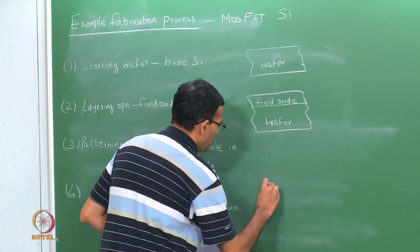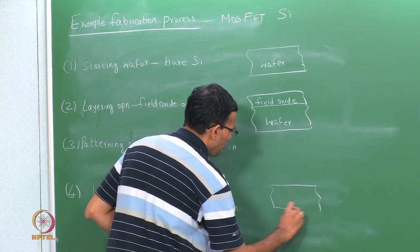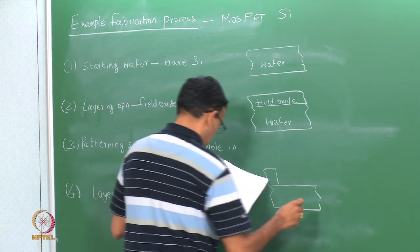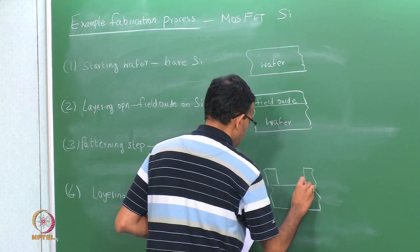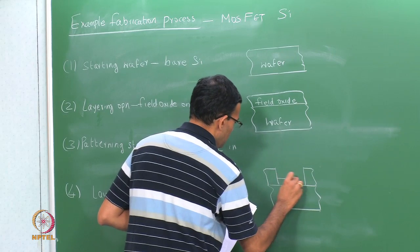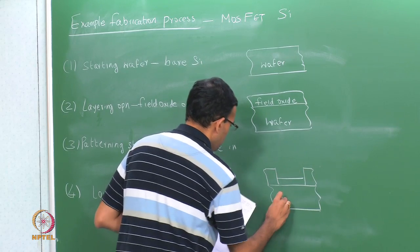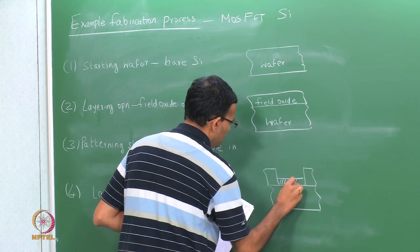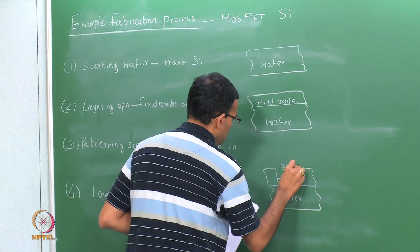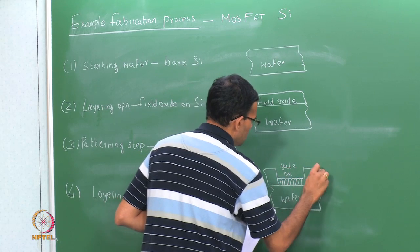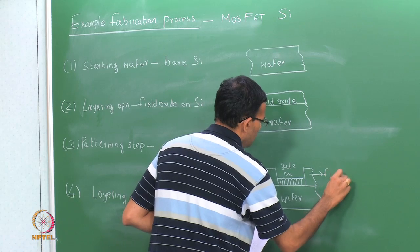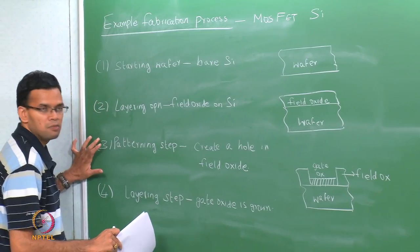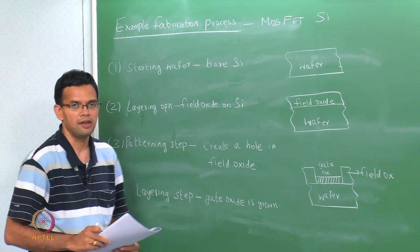In earlier technologies, SiO₂ would act as the gate oxide; later, silicon oxynitrides and now even high-k dielectric materials are used. But whatever the oxide, it is basically a layering step. So now you have your wafer with a hole in the field oxide and the gate oxide grown in that window. This diagram combines both the patterning and layering steps.